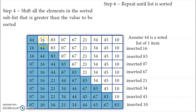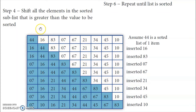The second element will now be sorted. The second element is 16. So 16 has to be inserted in its correct position. 44 is the first element and 16 is the second. Since 16 is not in its correct position, it is taken from here and inserted at the first position. So 16 will go to the first place and 44 will shift to the second place.